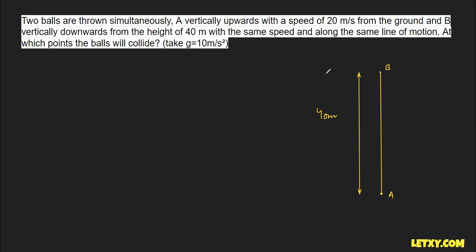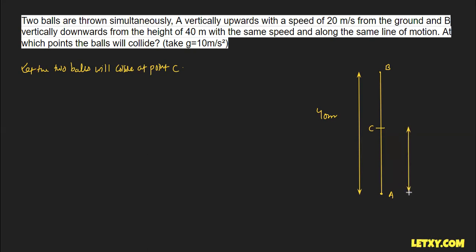Both balls will definitely collide at some point between A and B. Let's call that point C. We take the distance from the bottom to C as x, so the distance from C to the top is 40 minus x — both in meters.